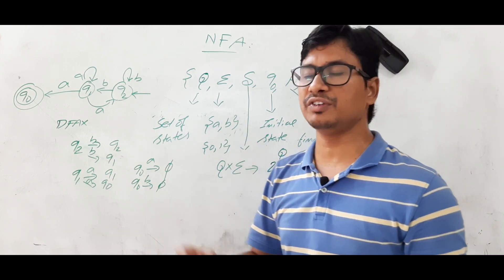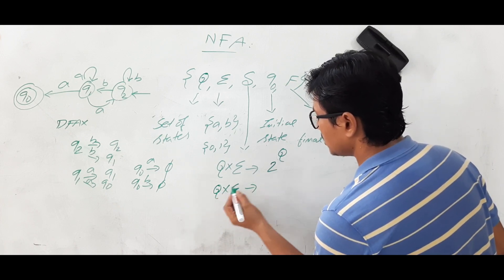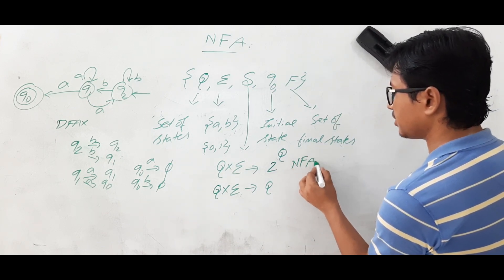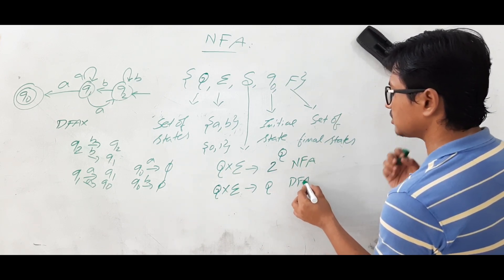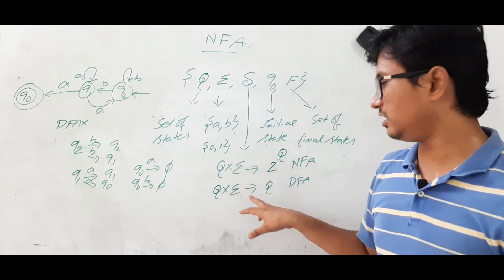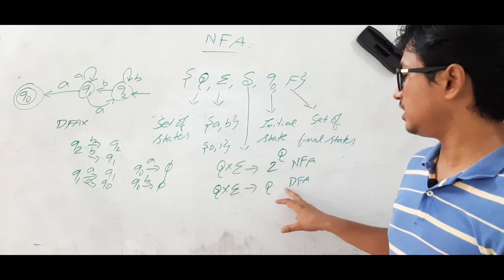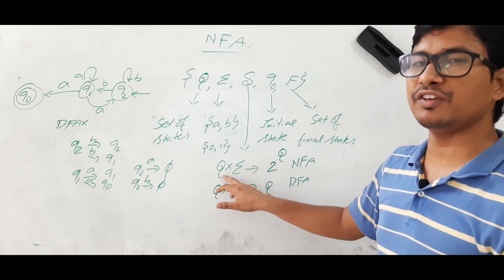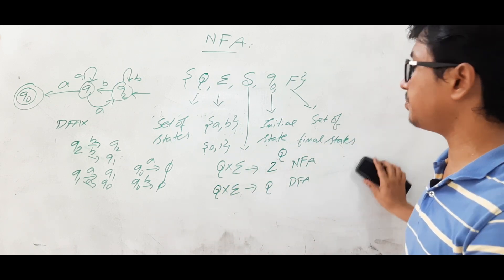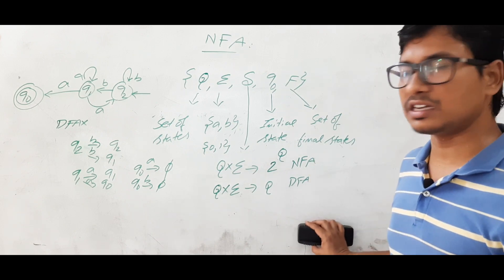The transition function of a DFA maps Q × Σ → Q, meaning from any state on any alphabet you go to exactly one state. Whereas the transition function of an NFA maps Q × Σ → 2^Q. This is the key difference: in a DFA you go to only one state, while in an NFA you can go to more than one state or nowhere at all. The rest of the components are the same.